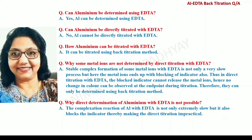Can Aluminium be determined using EDTA? Yes, it can be determined using EDTA. Can Aluminium be directly titrated with EDTA? No, Aluminium cannot be directly titrated with EDTA. While some metal ions are not determined by direct titration with EDTA, stable complex formation of some metal ions with EDTA is not only a slow process, but the metal ions also end up blocking the indicator.